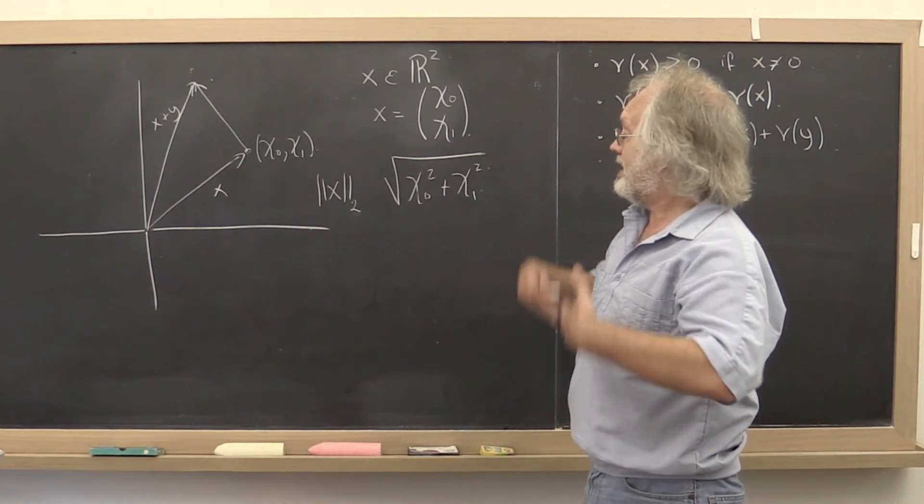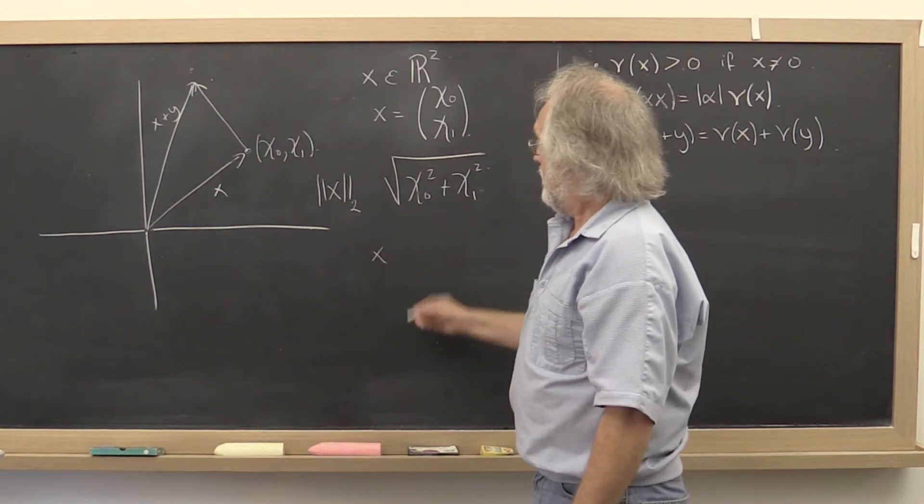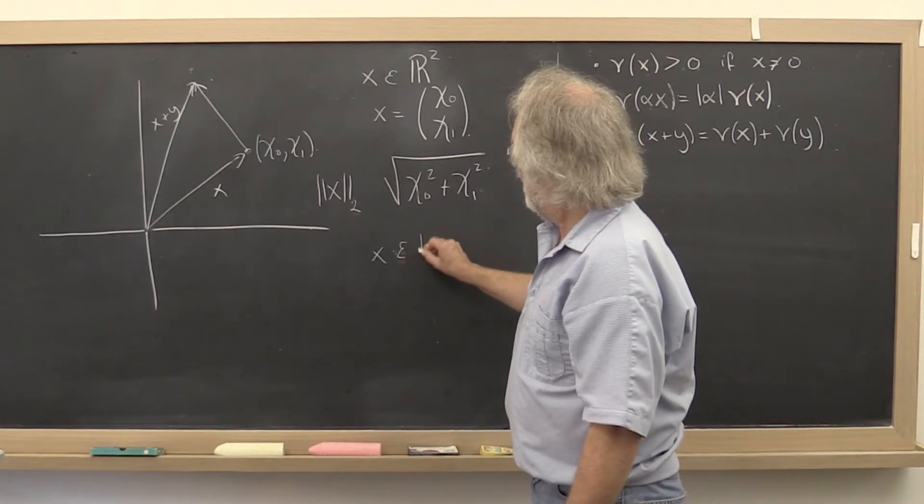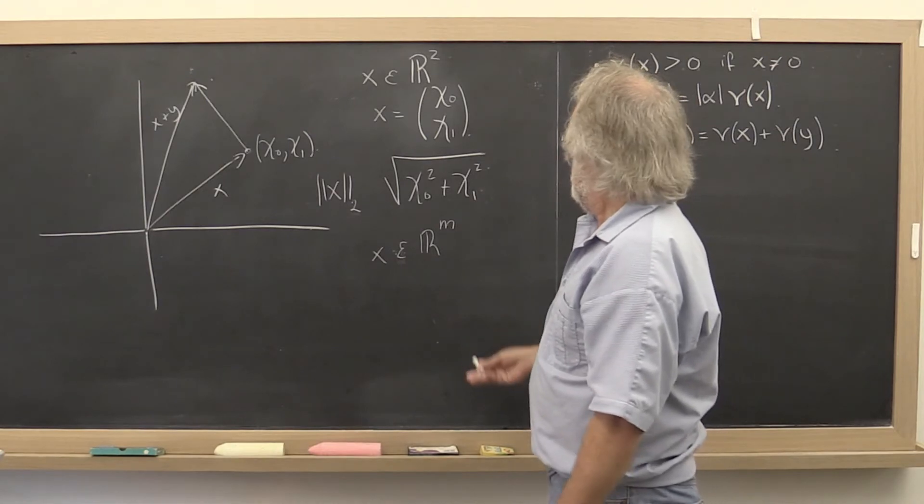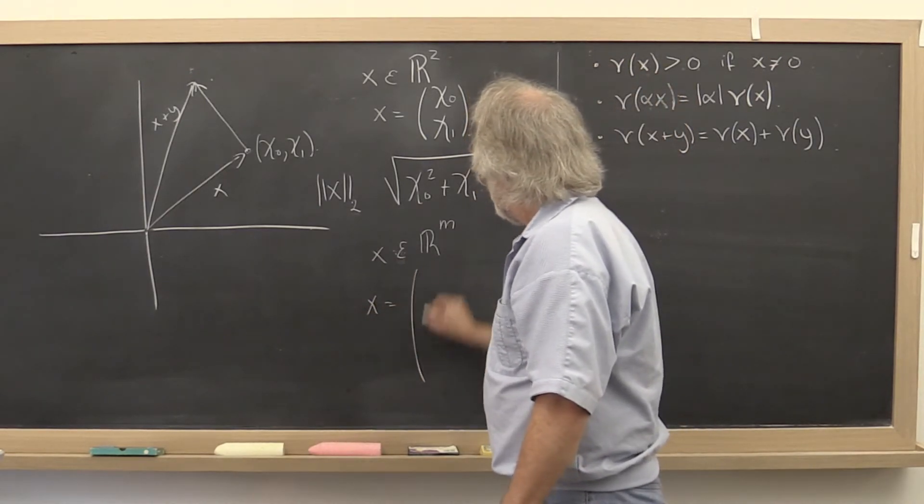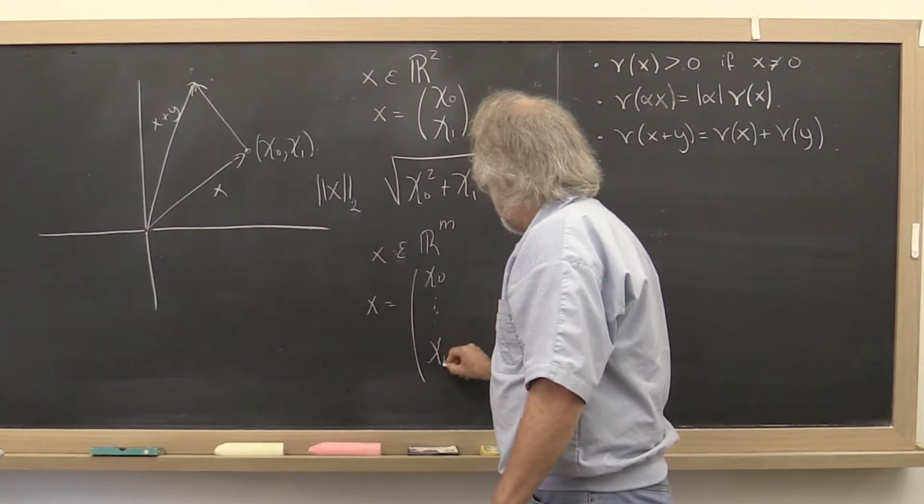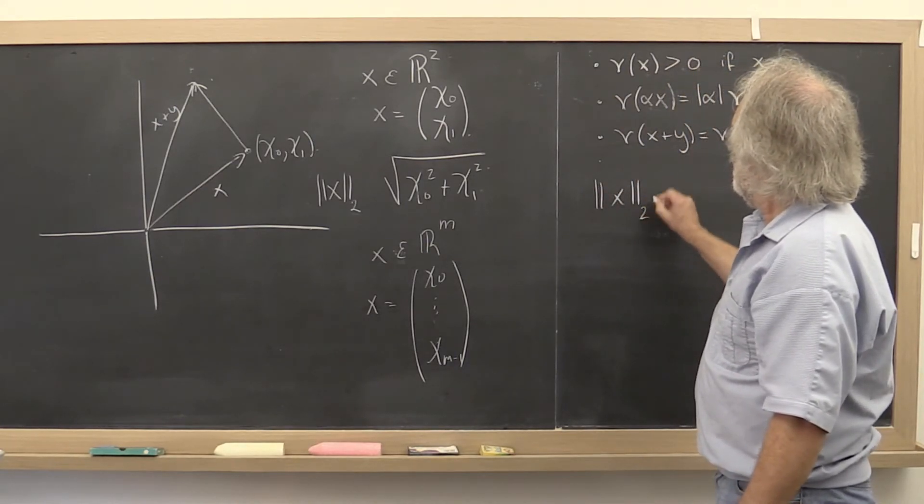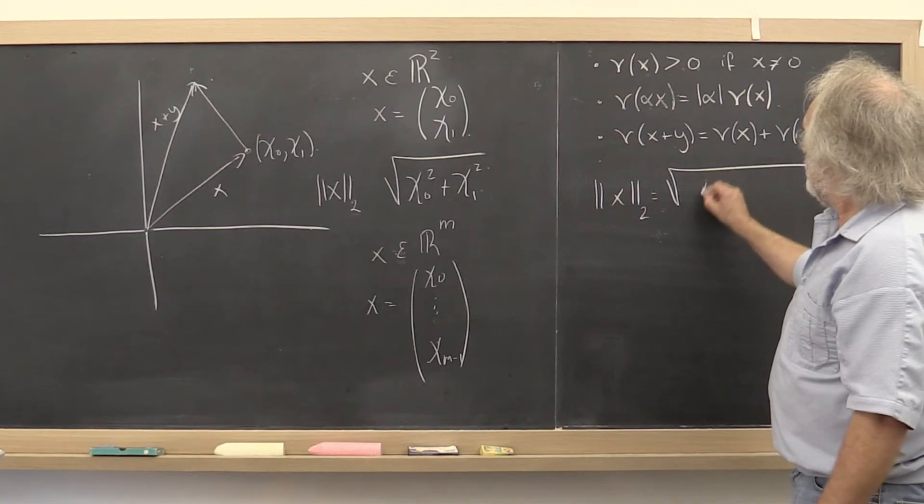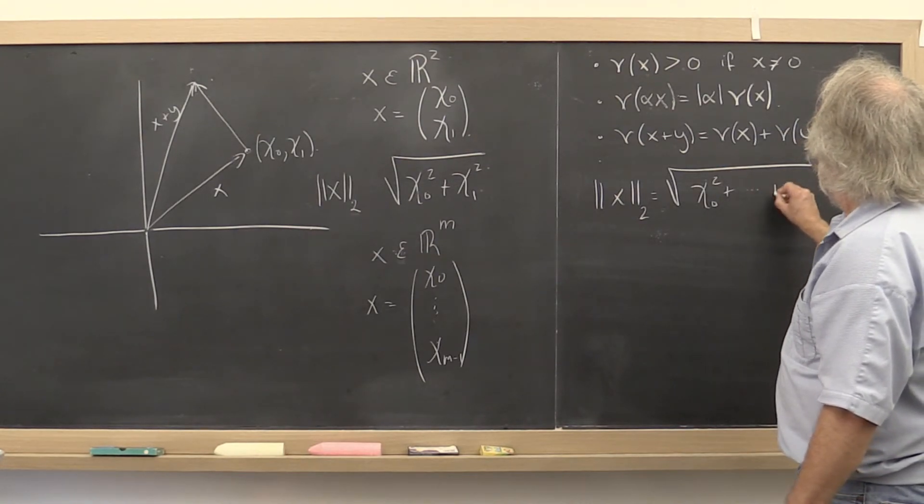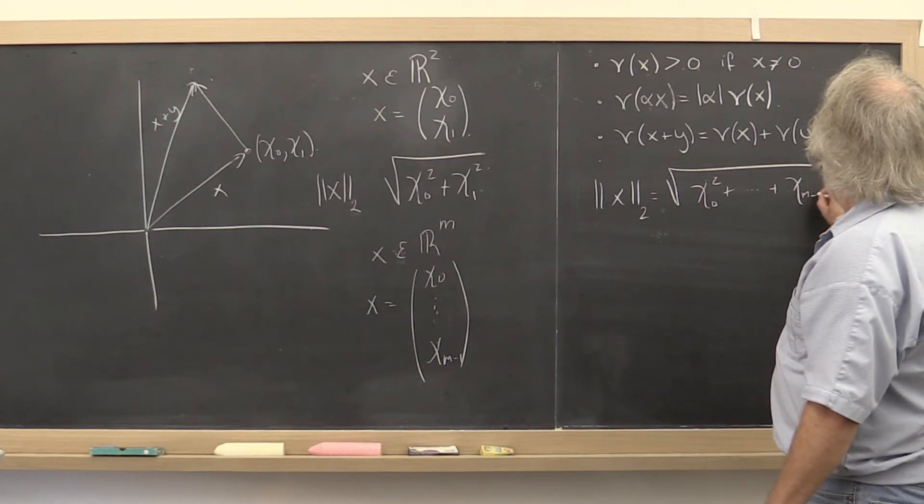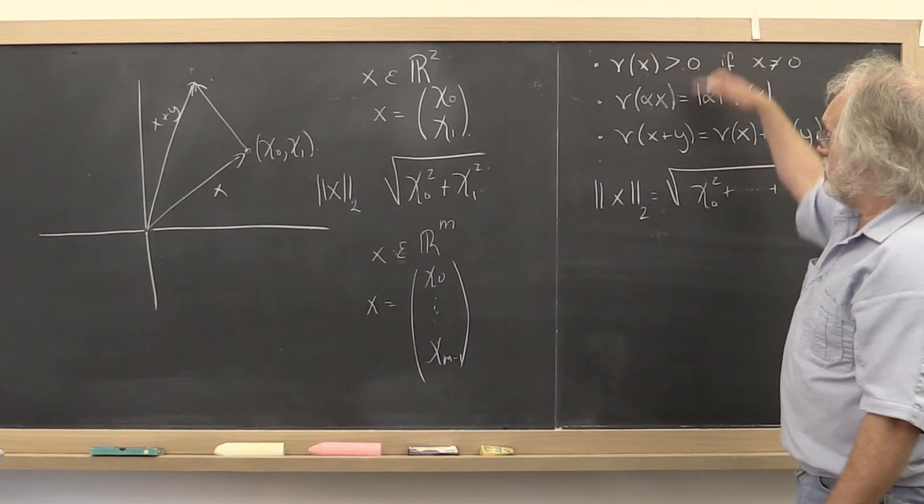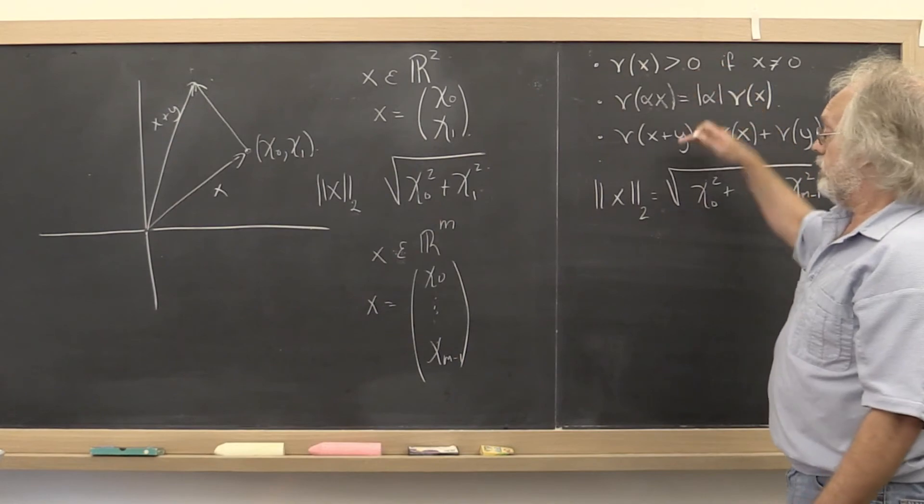And we can extend it naturally to a vector in n-space by saying, well, if x is the vector χ₀ through χₘ₋₁, then its 2-norm is simply the square root of the sum of the squares. And again, you can check that that meets all of these conditions.